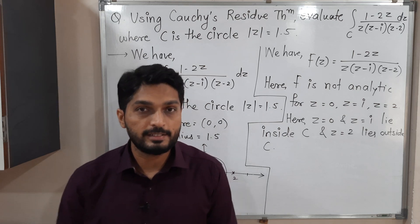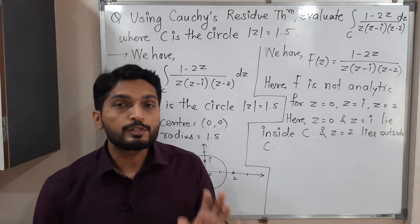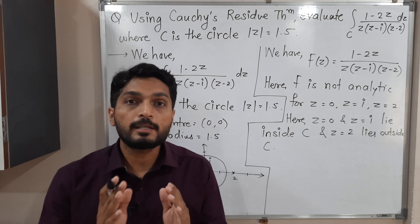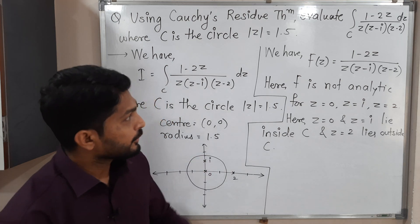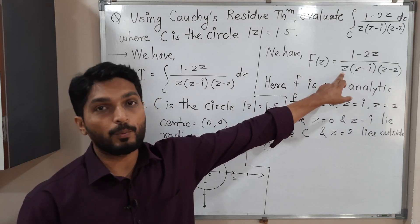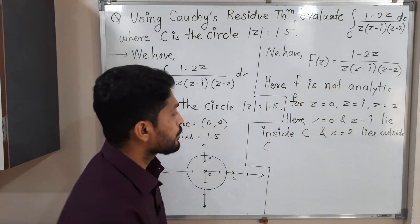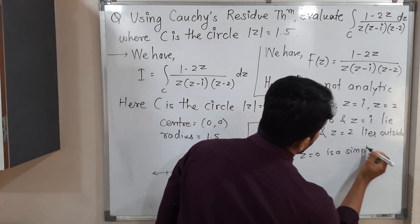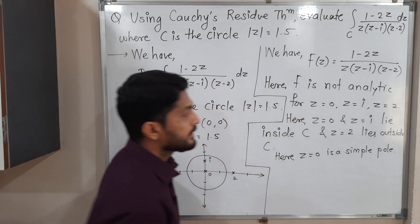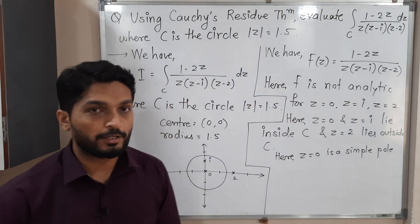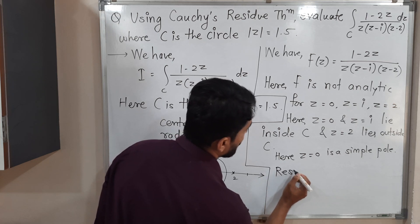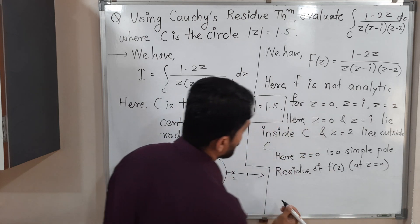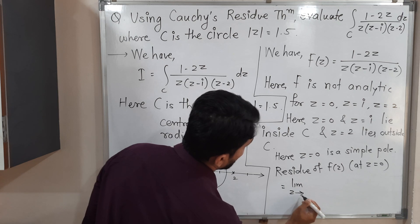Now the question is how to find residue. We have the definition involving the Laurent series expansion, but if the singular points are poles, we have separate formulas. You can see z equal to 0 is a pole of order 1 since there is no higher power — we also call it a simple pole. So let us find the residue of f(z) at z equal to 0.